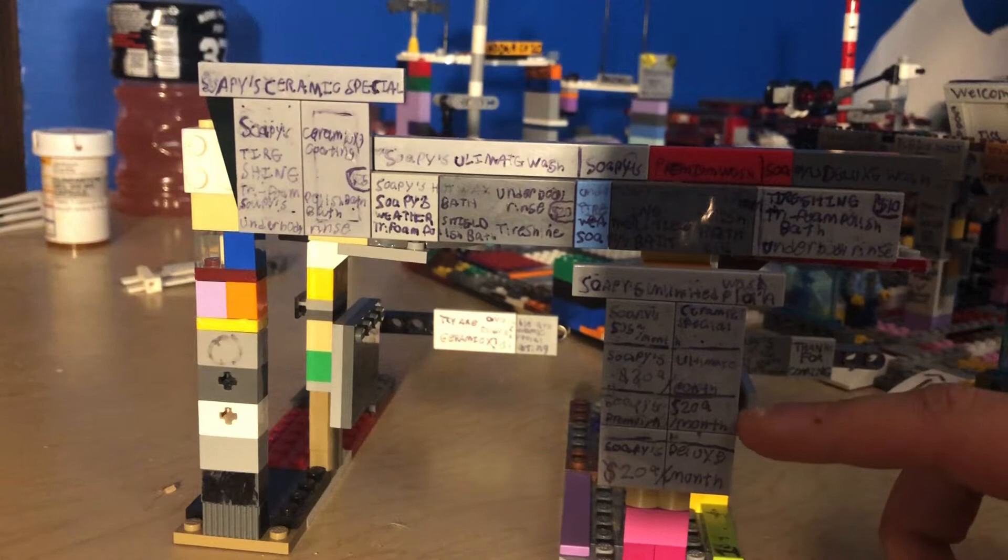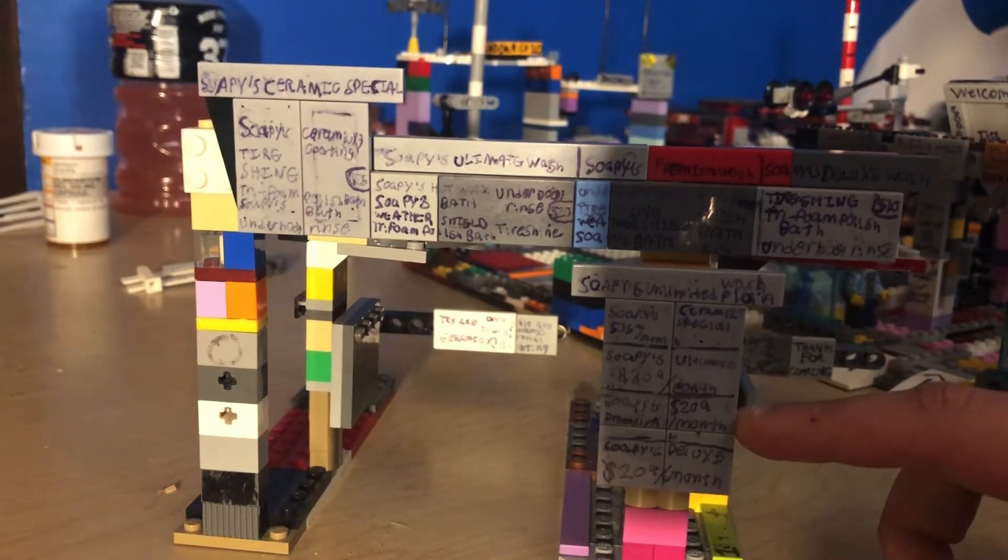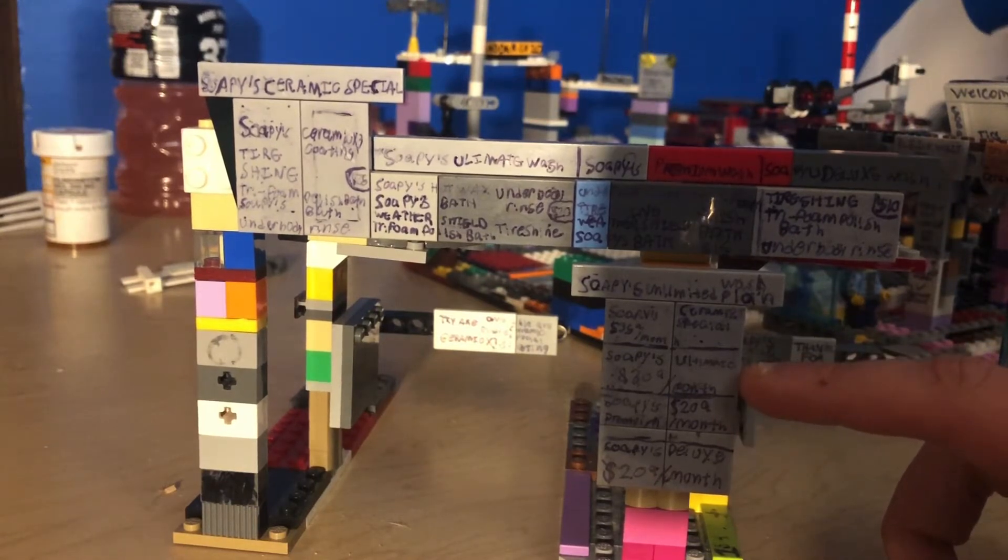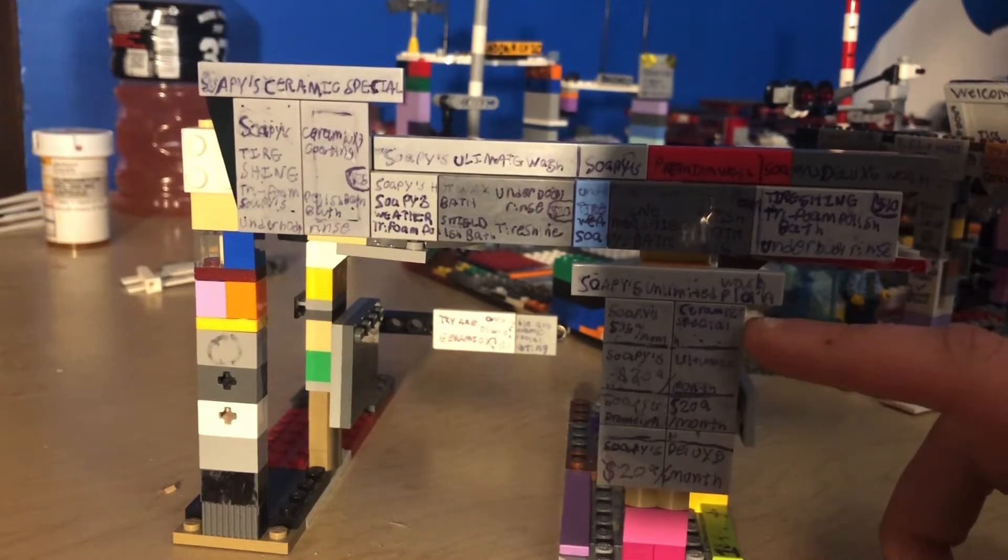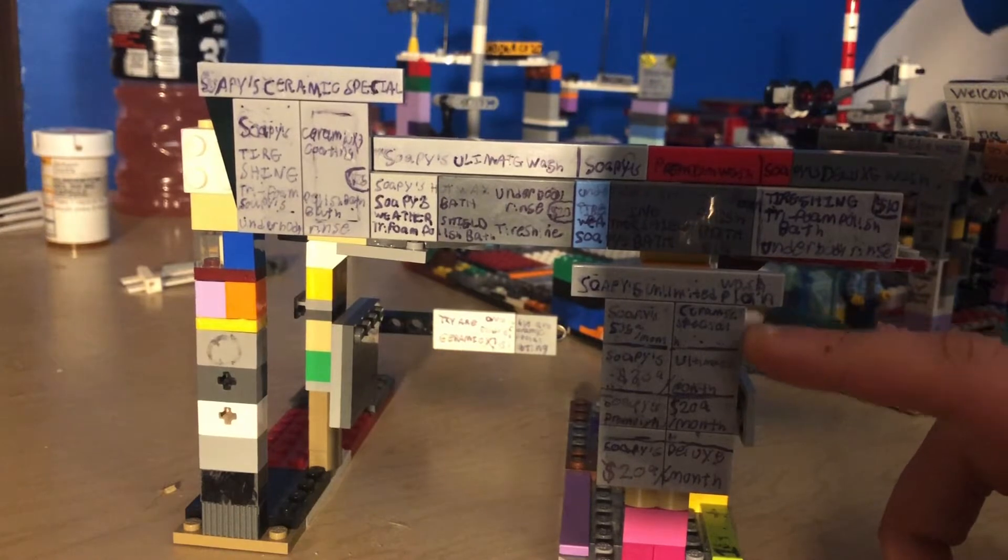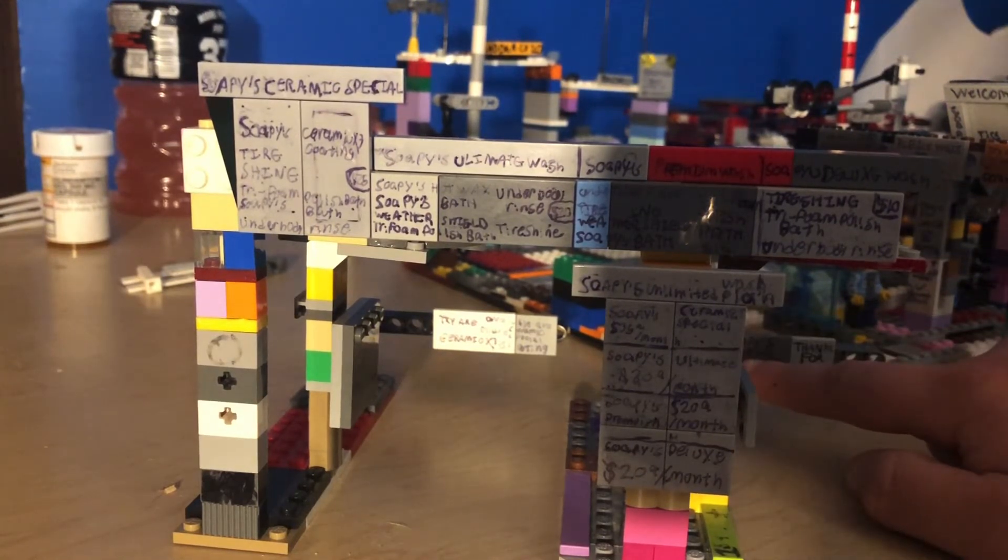$25 a month for the premium, $30 a month for the ultimate, and then ceramic special is $35 a month. On the gate armor here it says Soapy's unlimited wash plan starting at $20 a month.